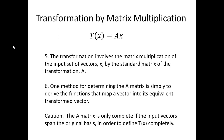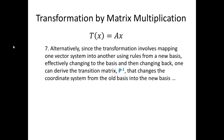The A matrix is only complete if the input vectors span the original basis in order to define Tx completely. In many cases, the A matrix is better determined if you change the basis and actually describe the change of basis. We can alternatively do the transformation involving mapping from one vector system onto the other using the rules of the new basis. We can change that basis by deriving the transition matrix, which changes the coordinate system from the old basis to the new basis.